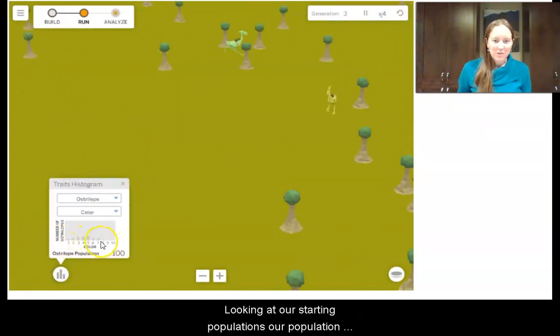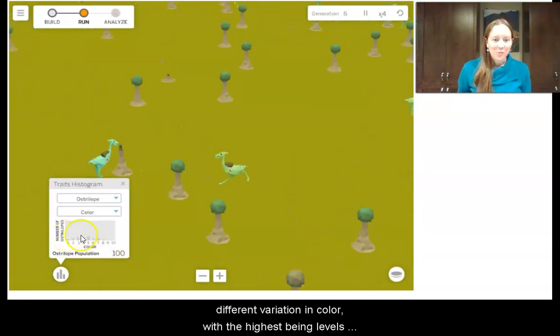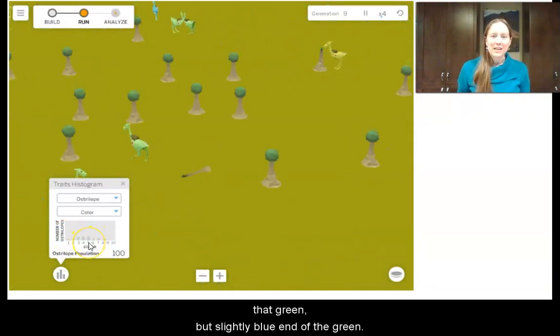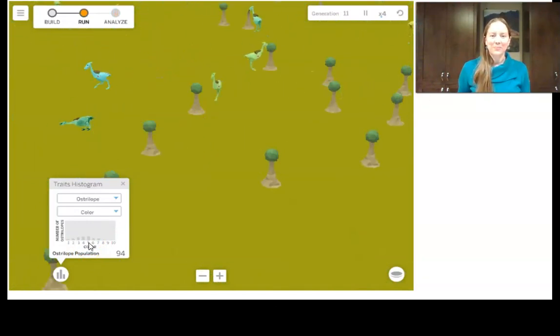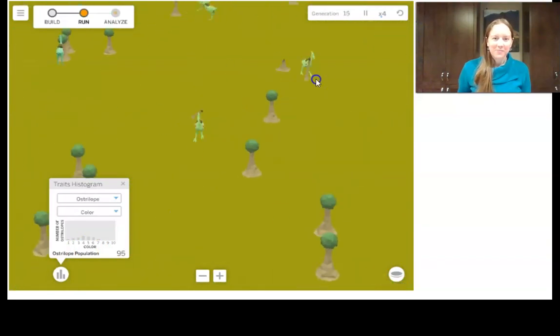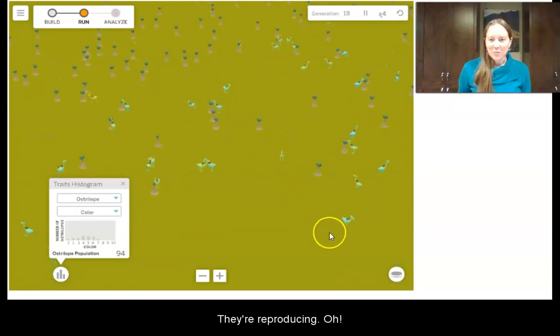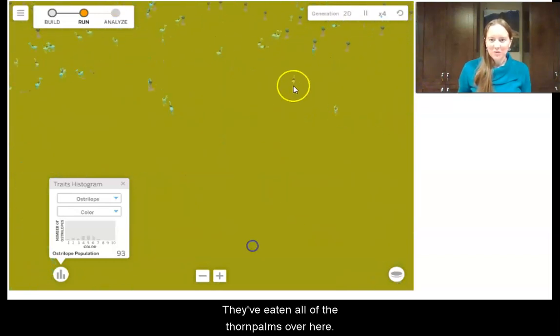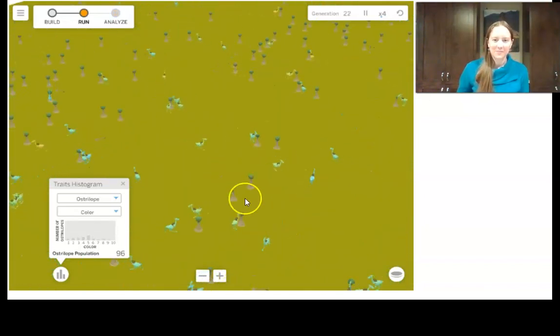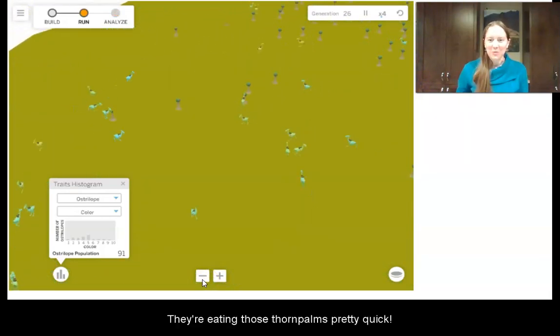Looking at our starting population, our population started the same where we have all that different variation in color, with the highest being levels four and five and six, kind of in the middle, kind of that green but slightly blue end of the green. We can see what happens to our ostrilopes. It looks like they're eating, they're reproducing. They've eaten all of the thorn palms over here. They have a lot of ostrilopes. They're eating those thorn palms pretty quick.